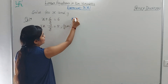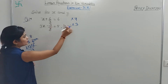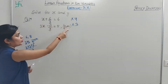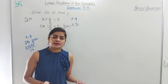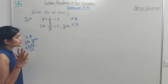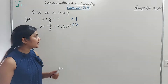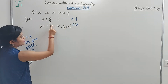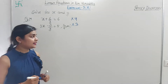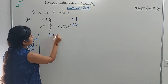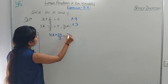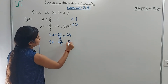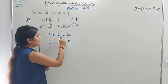Multiplying: equation 1 × 4 gives 4x + 24/y = 24. Equation 2 × 3 gives 9x - 24/y = 15. The coefficient of 1/y has been made equal in both equations. Since the signs are opposite, we add the two equations — the 24/y terms cancel.